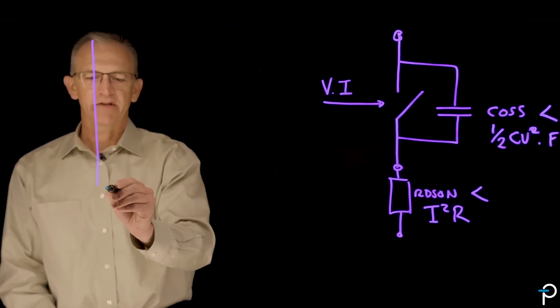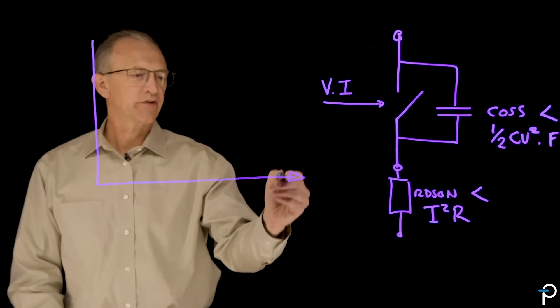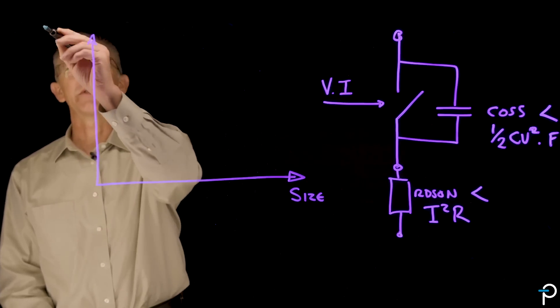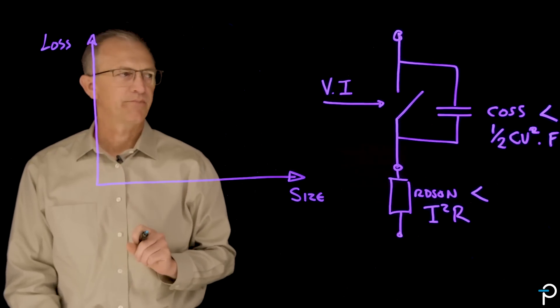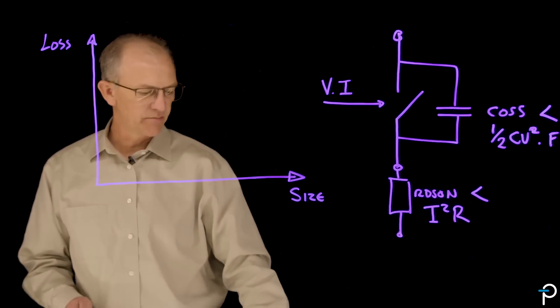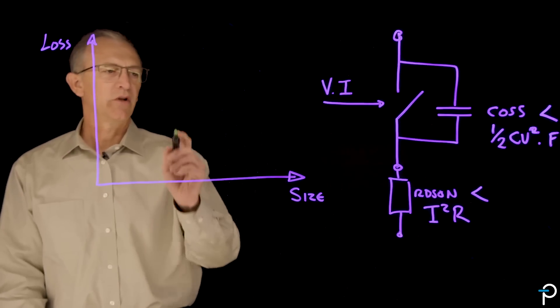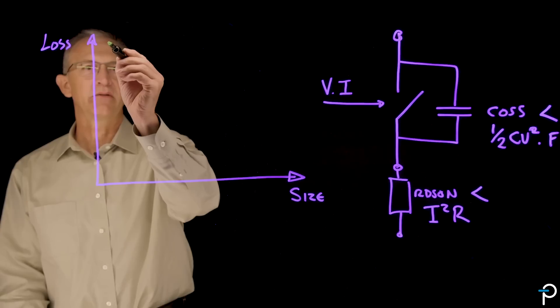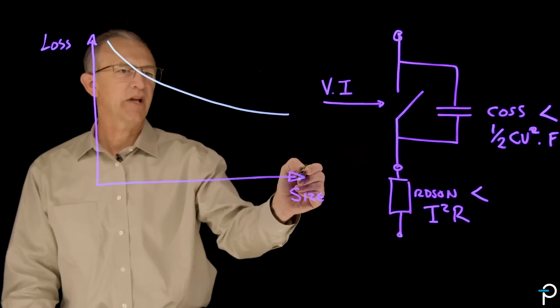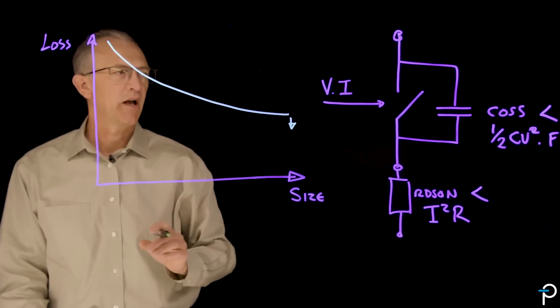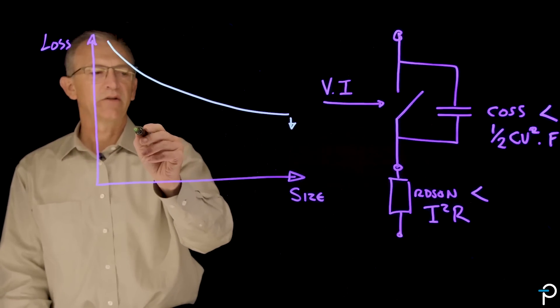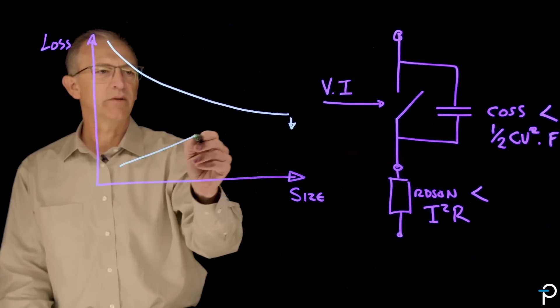This is an axis. It's a little bit of a constructed axis, but I'm going to put physical size on the x-axis and losses on the y-axis. Looking at RDS-on and COSS for a standard MOSFET, the losses related to RDS-on are going to go down with size. As a transistor gets bigger, the losses get smaller. However, as the transistor gets bigger, you have increased capacitance.